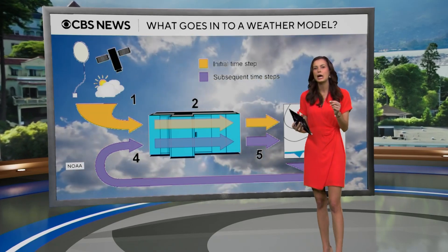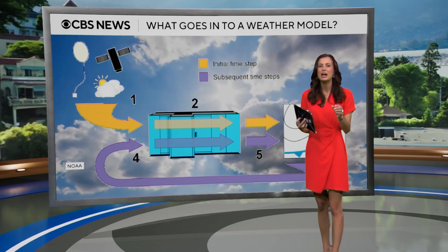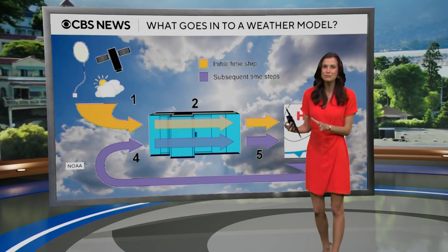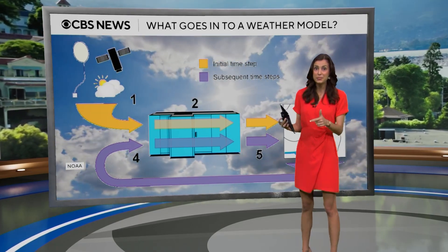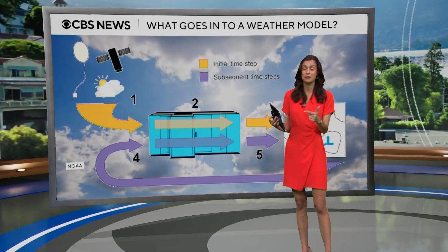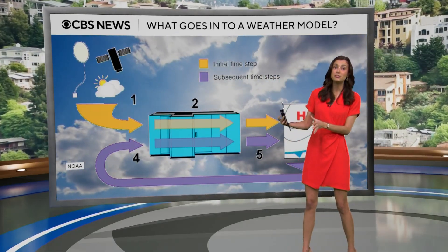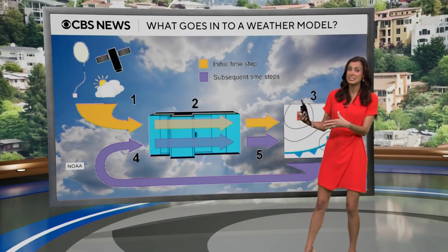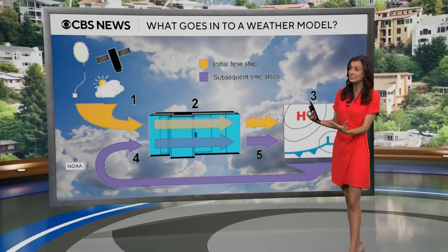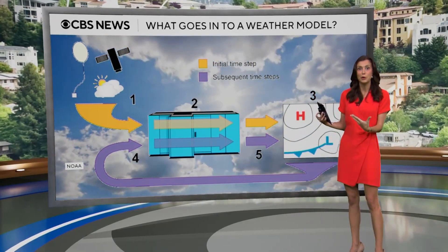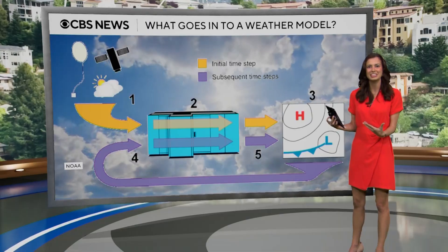It's the combination of the millions of equations with the physical data of what's currently going on in the atmosphere that gets put into the supercomputers — and that's what's ultimately creating our weather models.